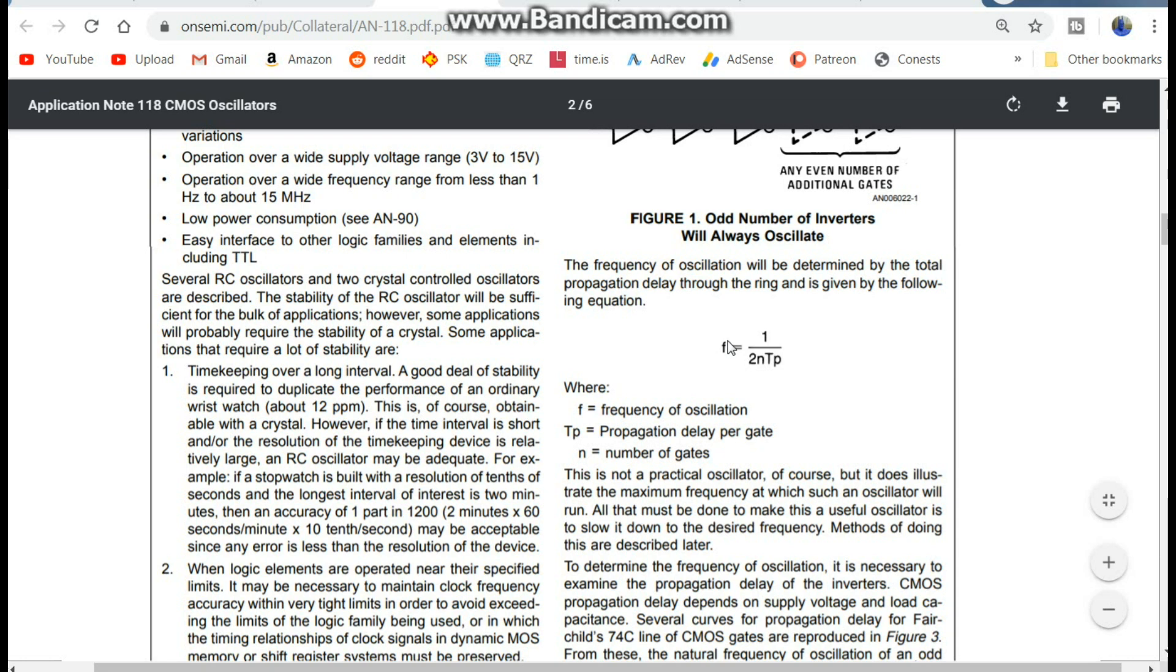So the maximum frequency of oscillation is the total propagation delay TP by the number of gates. So it is the inverse of two times the number of gates, two times six times the propagation delay. And how do we find the propagation delay?